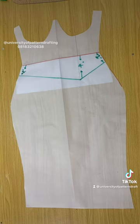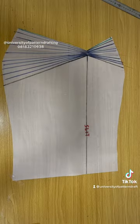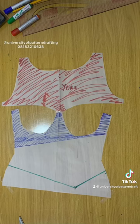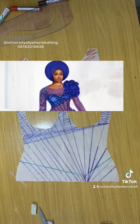Remember that the pointed part of your basque waistline should be along your left bust span line. Proceed to extend that left bust span line to the hemline of your skirt in order to create your slit, and then go ahead and create your drape design. Remember to cut out that diagonal empire waistline just as you can see that I have done.